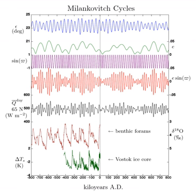As the orientation of Earth's orbit changes, each season will gradually start earlier in the year. Precession means the Earth's non-uniform motion will affect different seasons. Winter, for instance, will be in a different section of the orbit.